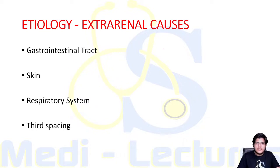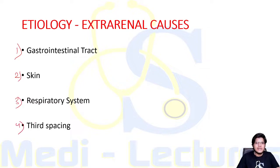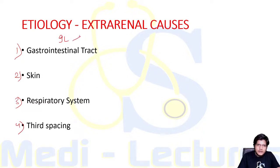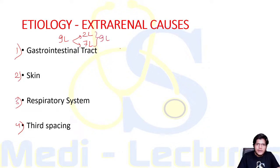Now for the extra-renal causes of hypovolemia. These can be due to the GI tract, skin, respiratory system, and third spacing of fluid. In the GI tract, approximately 9 liters of fluid enters daily — 2 liters from ingestion and 7 liters from secretions by the GI tract itself. Out of this 9 liters, 98% is successfully absorbed.